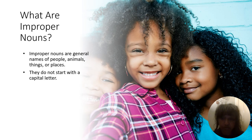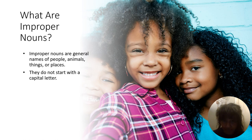Now let's go over what improper nouns are. Improper nouns are general names of people, animals, things, or places. So if you look over and you see an animal that looks like a dog and you call it a dog, that is an improper noun — which means it doesn't start with a capital letter and it doesn't give you the specific name of the dog. Make sense?